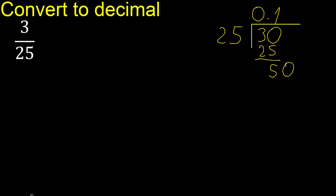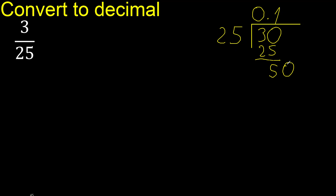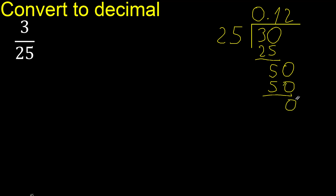The decimal point is here. 25 multiplied by what number is nearest to 50? 25 times 2 is exactly 50. Subtract: 50 minus 50 is 0. Therefore, finish.